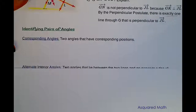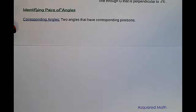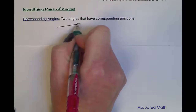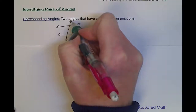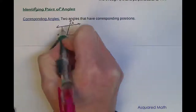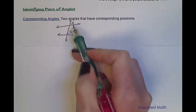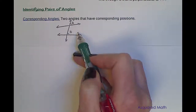Next, we are going to work on identifying pairs of angles. The first type is corresponding angles — two angles that have corresponding positions. If we draw two lines cut by a transversal and name this angle A and angle B, these two angles are corresponding because they are both above the line and to the right of the transversal, so they are in the same position.